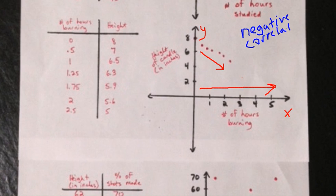And once again, just like in my previous example, because the points are located relatively close together, this will be considered a strong negative correlation.